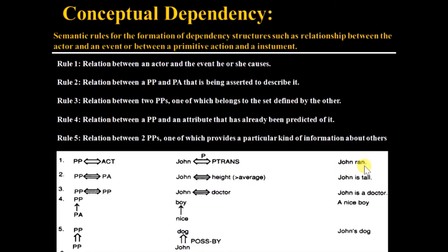Now consider the first sentence, John ran. John is the picture producer. Ran is the p-trans because you are moving from one location to the another location. Now, this type of sentence can be represented as John p-trans. So this is the symbol.